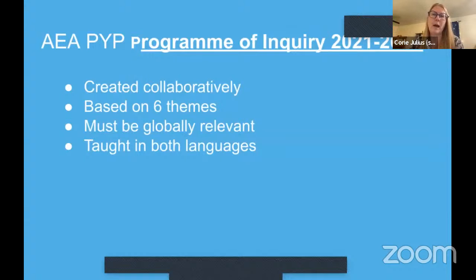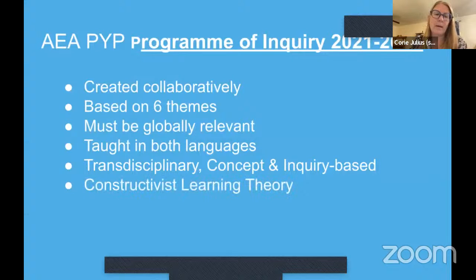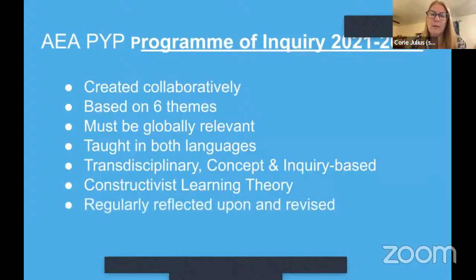Our program is also regularly reflected upon and revised — every single year and every single unit, teachers are constantly reflecting, revising, improving, and getting feedback from students and each other about what's working and what's not. This program of inquiry document can be found on our website. On the left-hand side you'll see the six transdisciplinary units that go across every grade level: Who We Are, Where We Are in Time and Place, How We Express Ourselves, How the World Works, How We Organize Ourselves, and Sharing the Planet.